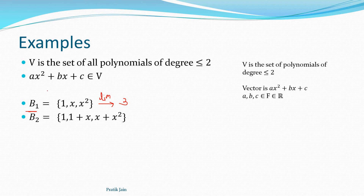You can also determine dimension as the number of free variables. In this polynomial, you can change a, b, and c — so the number of things you can change is your dimension. We'll talk about this more in the next video with further examples. The number of free variables equals the dimension, and the number of vectors in the basis also equals the dimension.